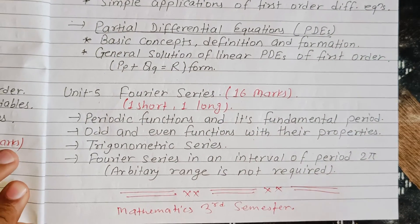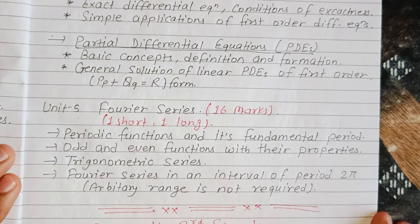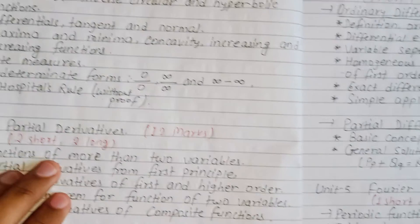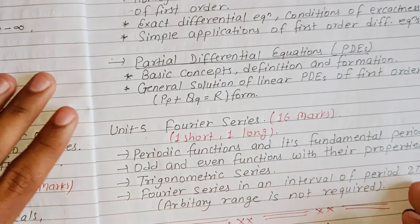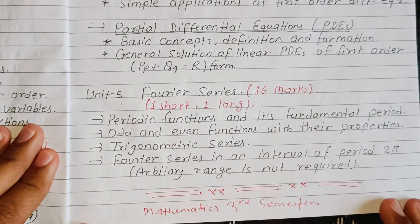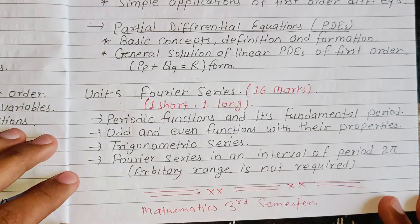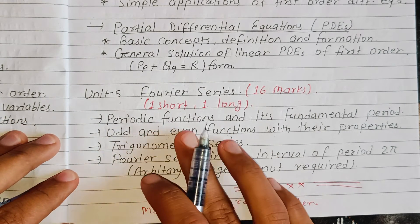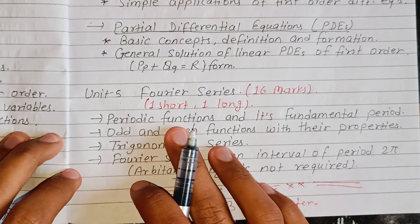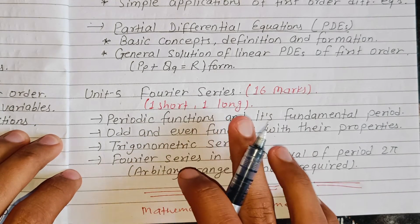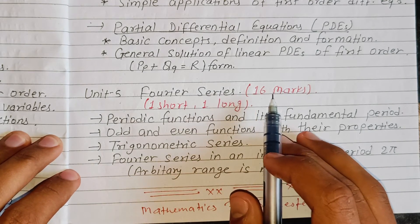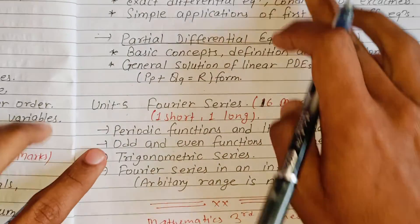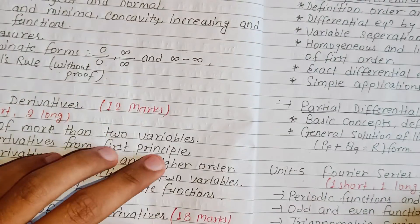Unit five — Fourier series, 16 marks. The value of this unit — periodic functions and their fundamental period, odd and even functions with their properties, trigonometric series. Fourier series in an interval of period two pi, arbitrary range. You can say 24 plus 6 plus 12 — six marks way, six marks on.